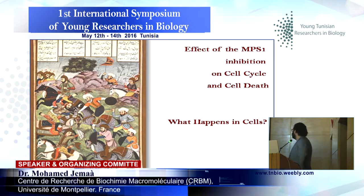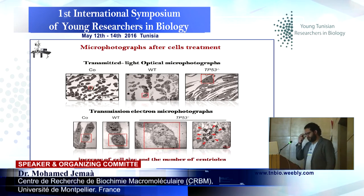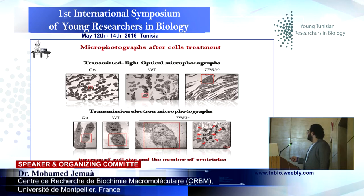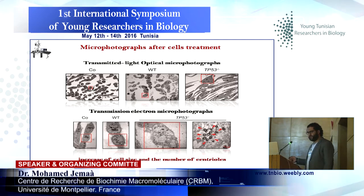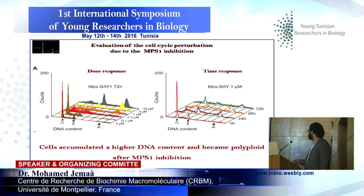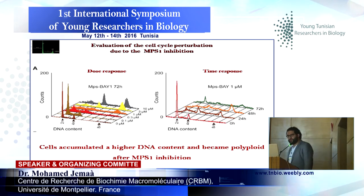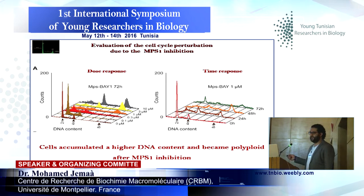So, what really happens in cells in relation to the cell cycle? When we observe cells with microscopy, we can clearly see that cells become bigger — especially in the context of P53 knockout. When we observe them with electronic microscopy, we can clearly see the difference between treated cells and control ones. Cells become bigger, and we can also see an augmentation in the number of centrioles. By flow cytometry, we can clearly see that after MPS1 inhibition, cells accumulate higher DNA content — they become polyploid — in a dose- and time-dependent fashion.